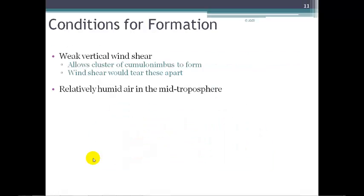Other conditions for hurricane formation include weak vertical wind shear — if we have strong vertical wind shear, it doesn't allow cumulonimbus clouds to grow and topples them over before they get big enough. The last factor is relatively humid air in the mid-troposphere.